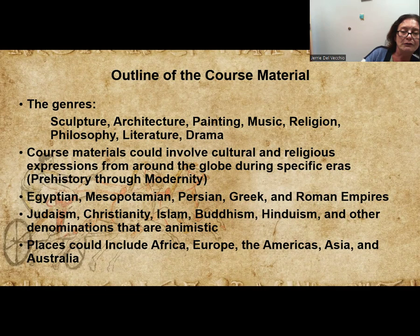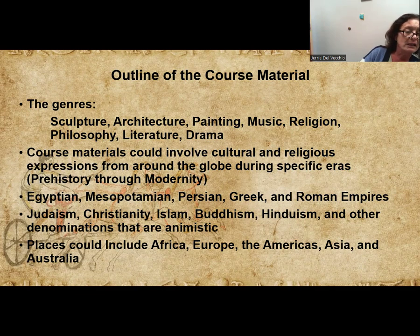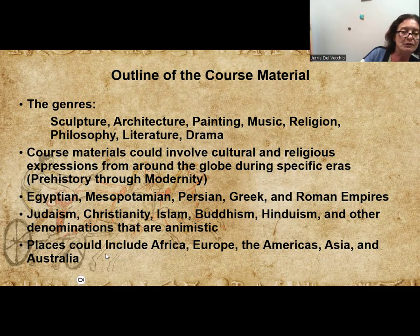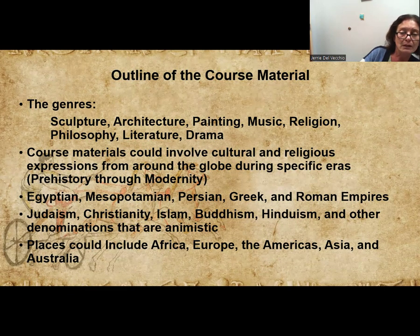Any of the genres could be taught by your instructors, such as sculpture, architecture, painting, music, religion, philosophy, literature, and drama. Materials could involve cultural and religious expressions from around the globe during specific eras, including prehistory through modernity. We can look at different empires and what modern nation states look like today, explore different religious bodies such as Judaism, Christianity, and Islam — how they are apart but also how they are similar. Places covered could include Africa, Europe, the Americas, Asia, and Australia.